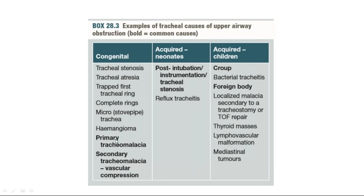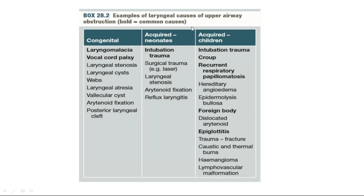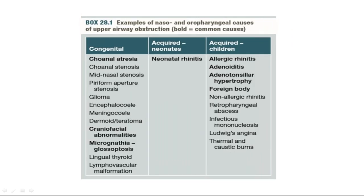Tracheal causes include congenital primary tracheomalacia and secondary tracheomalacia due to vascular compression — for example, an aortic aneurysm compressing the trachea. Acquired neonatal tracheal conditions include post-intubation or instrumentation causing tracheal stenosis. In children, acquired tracheal causes include croup and foreign body. These are the tracheal and laryngeal causes of upper airway obstruction, along with nasopharyngeal and oropharyngeal causes.